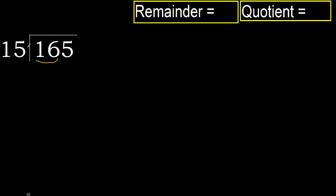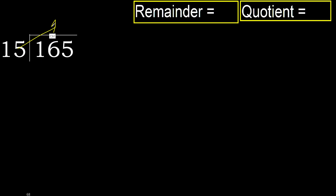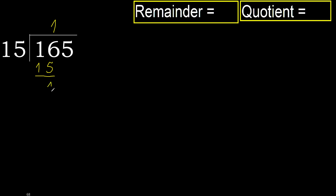With 16, 15 multiplied by which number is nearest to 16 but not greater? 15 multiplied by 2 is 30 — 30 is greater. Multiplied by 1 is 15 — is not greater. OK, subtract: 16 minus 15 is 1.